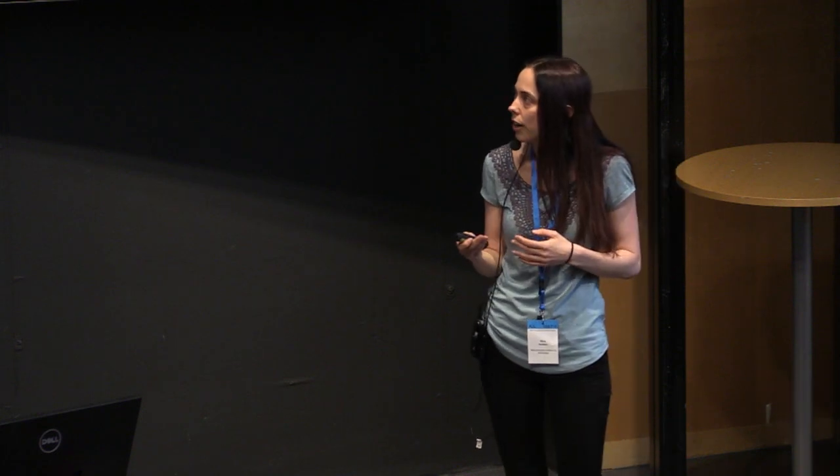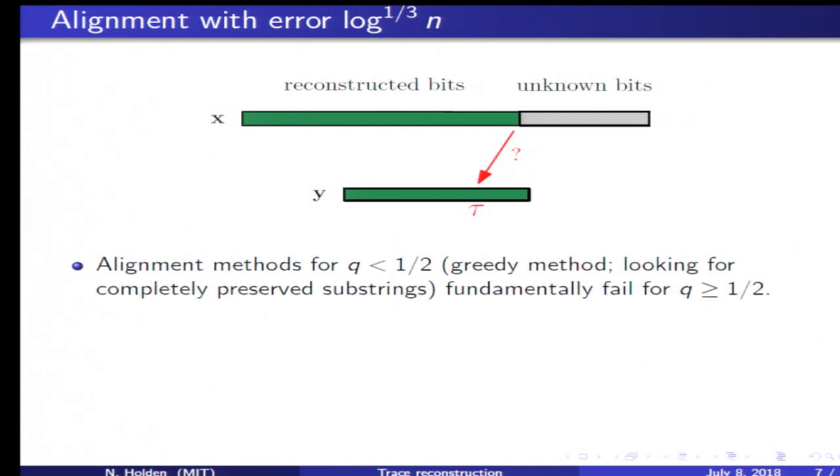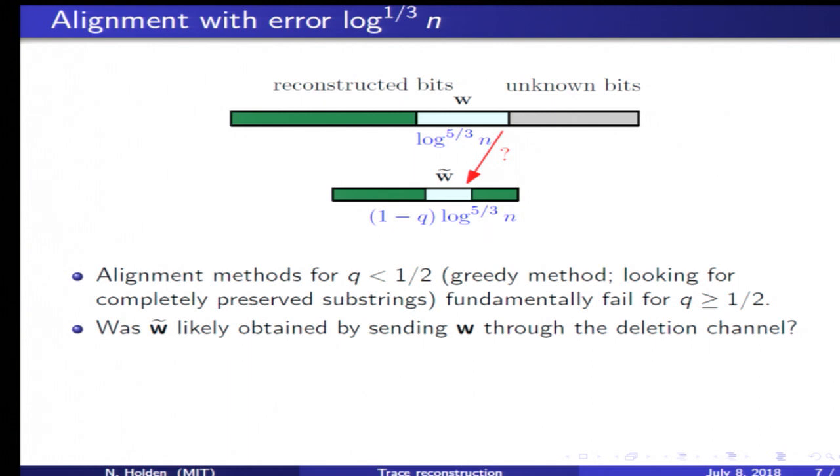Alignment for q less than a half can also be done by looking at long substrings of which no bits are deleted in the trace. But finding such long ranges of preserved bits is simply too unlikely in our case of high deletion probability. Again, there is a transition exactly at q equals a half.